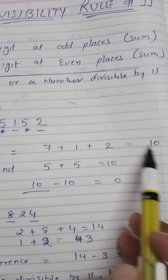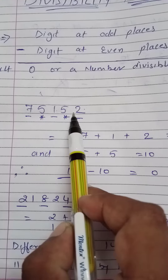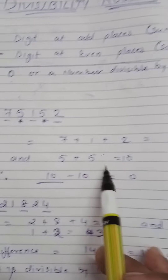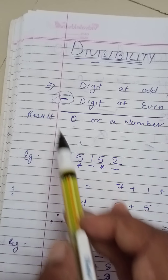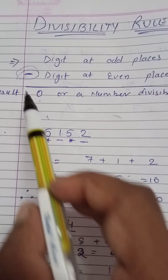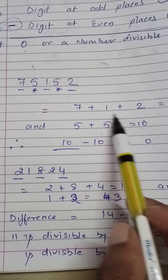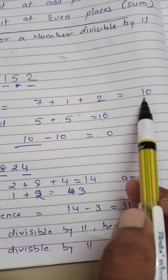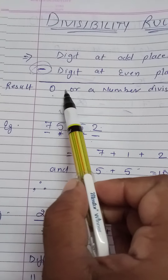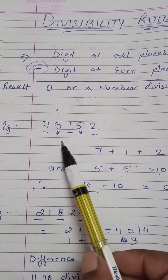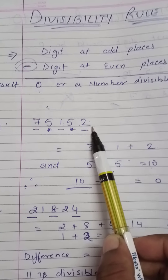For 75152, the sum of odd-place digits is 7 plus 1 plus 2 equals 10. The sum of even-place digits is 5 plus 5 equals 10. The difference is 10 minus 10 equals 0. Since the result is 0, we can clearly say that 75152 is divisible by 11.